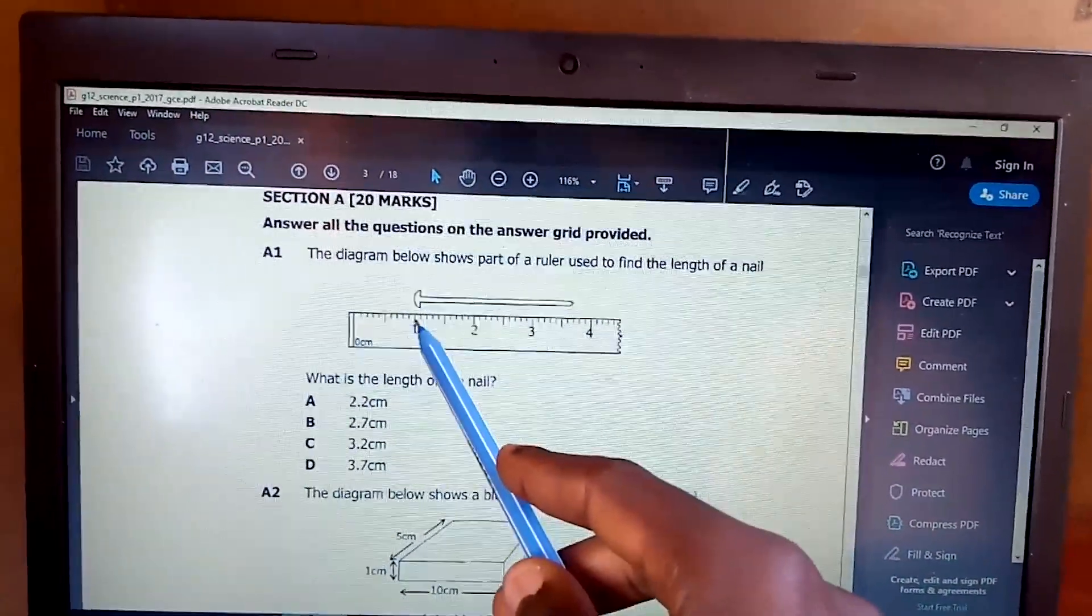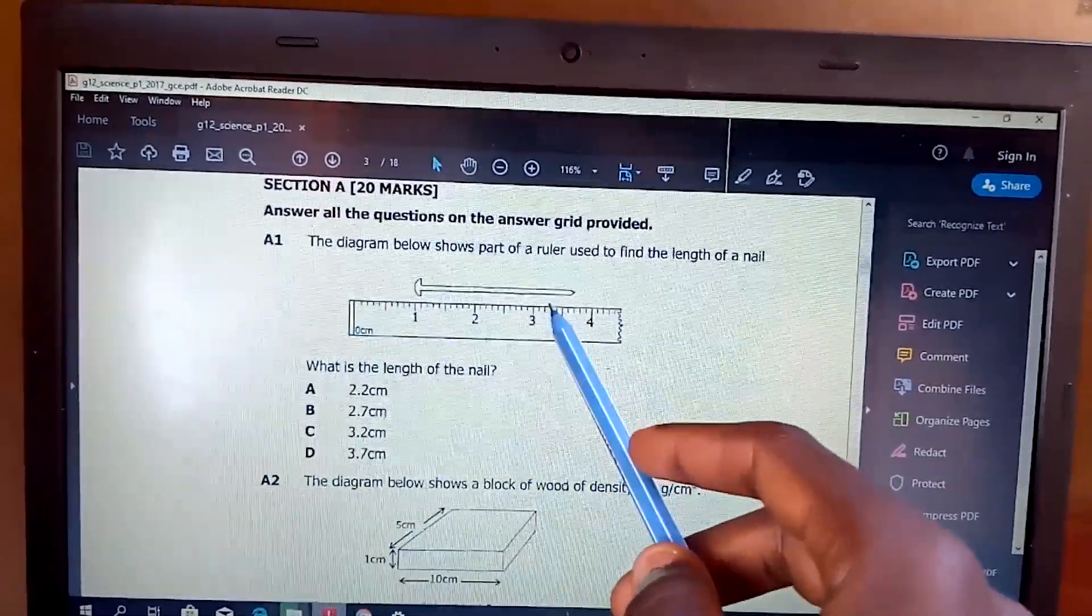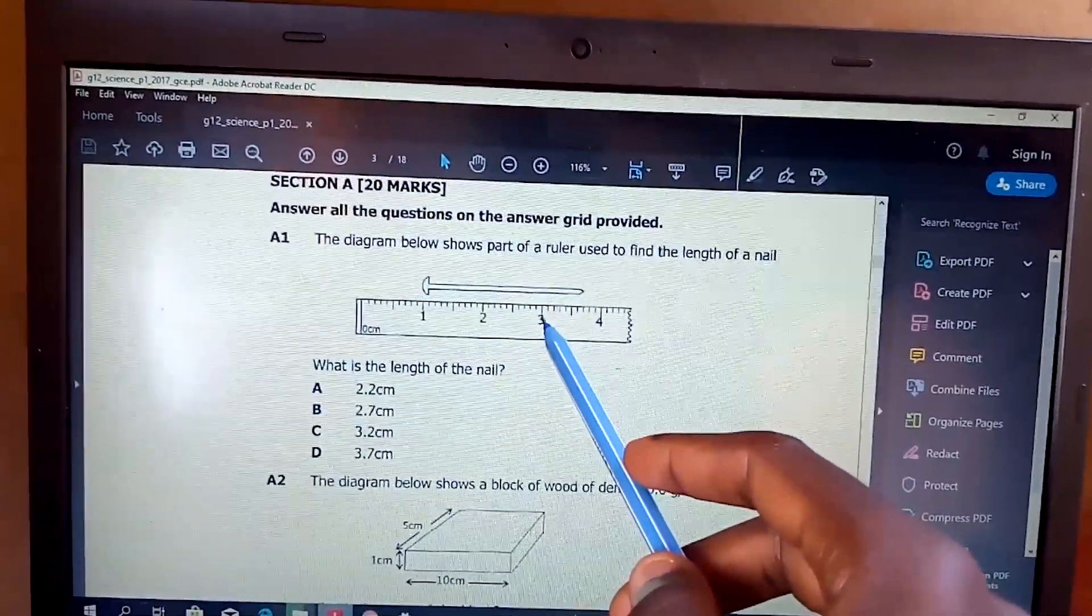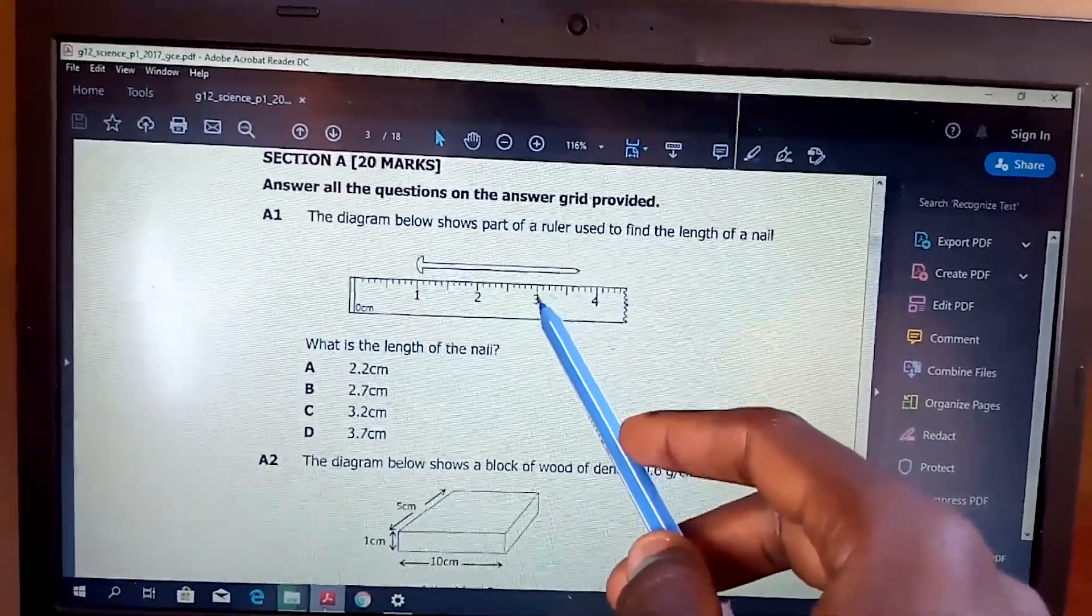So if you look at this point, it is starting at 1 cm, meaning from here to here that's 1 cm, and then from here to here that's another cm. But these divisions, this is 1 mm and this is 1 mm, or we can say 0.1 cm.